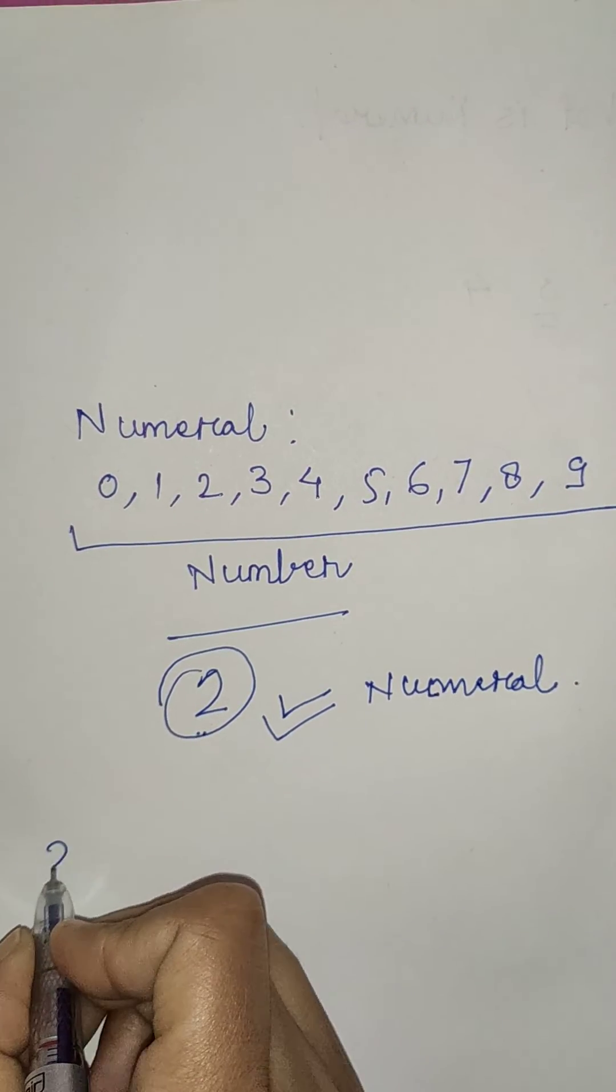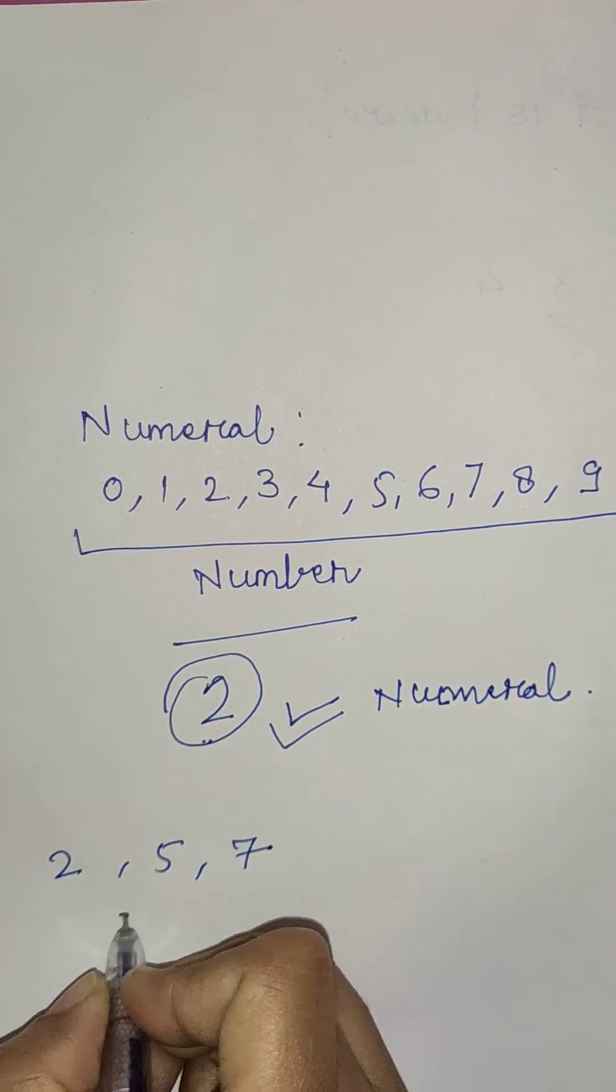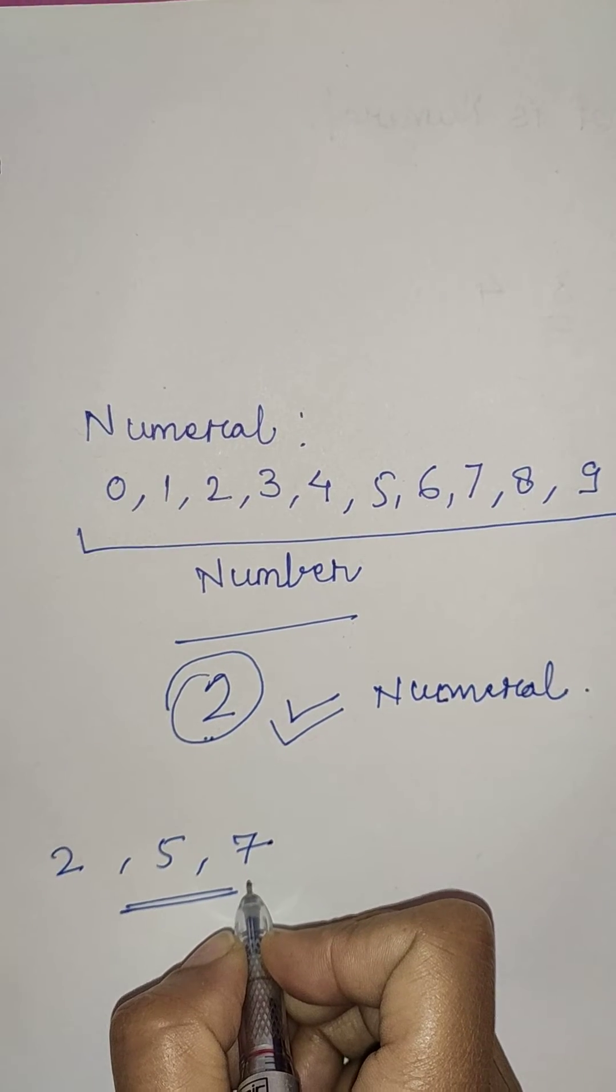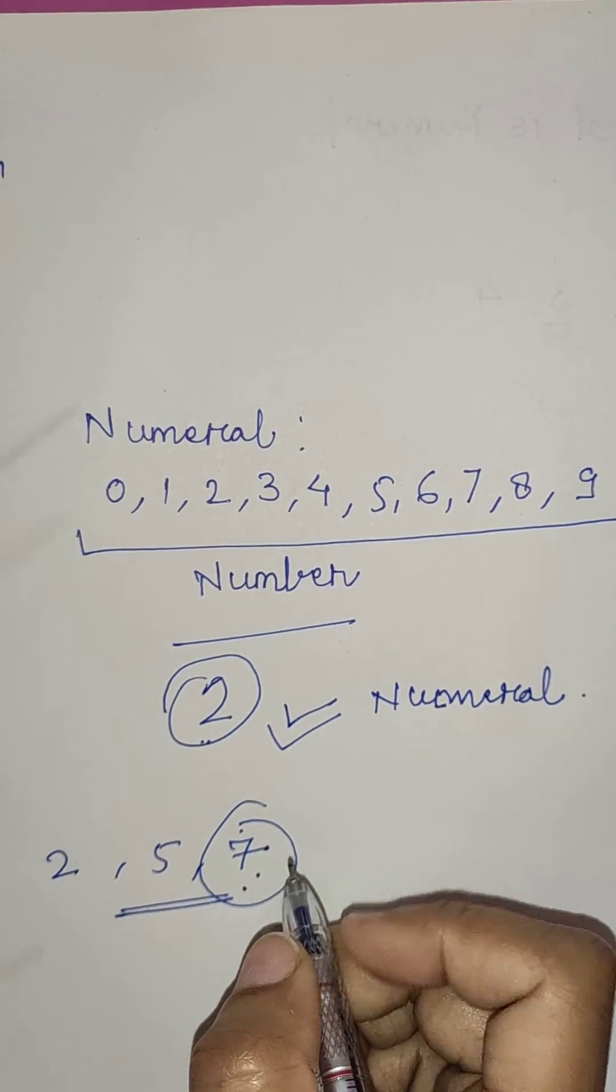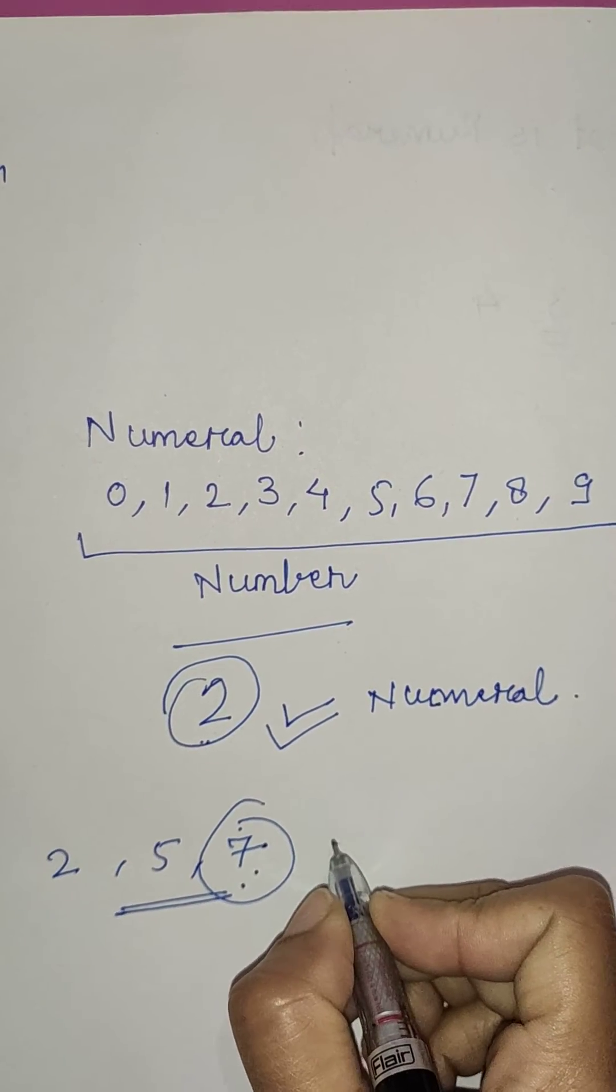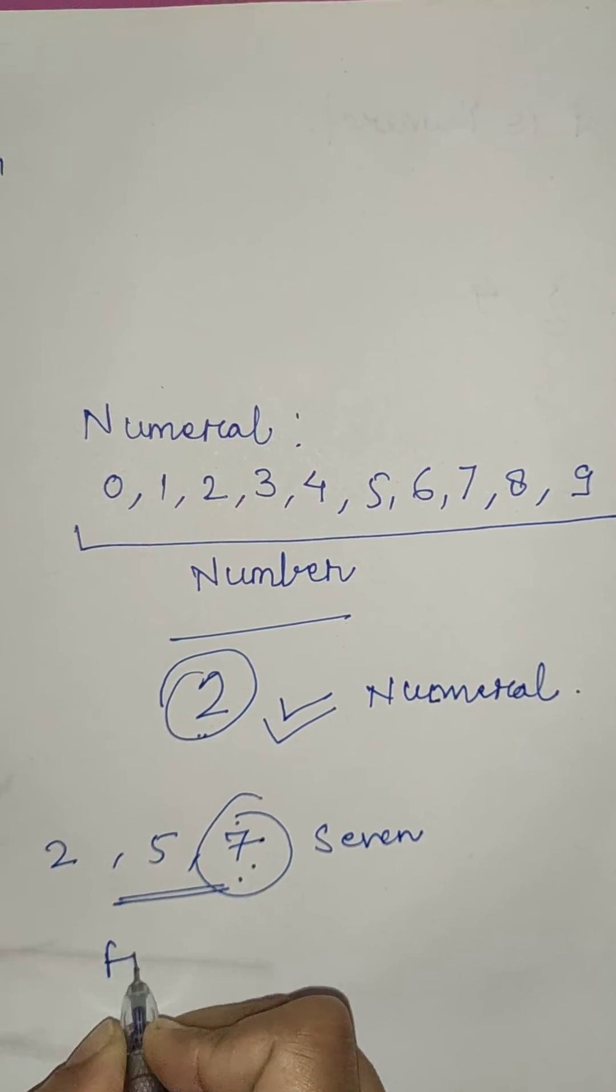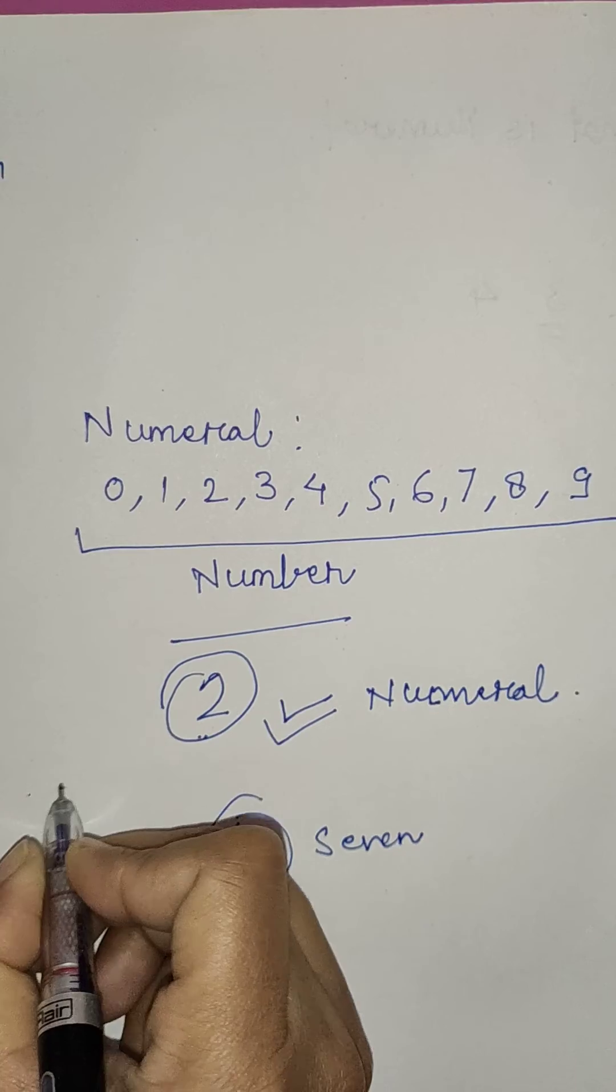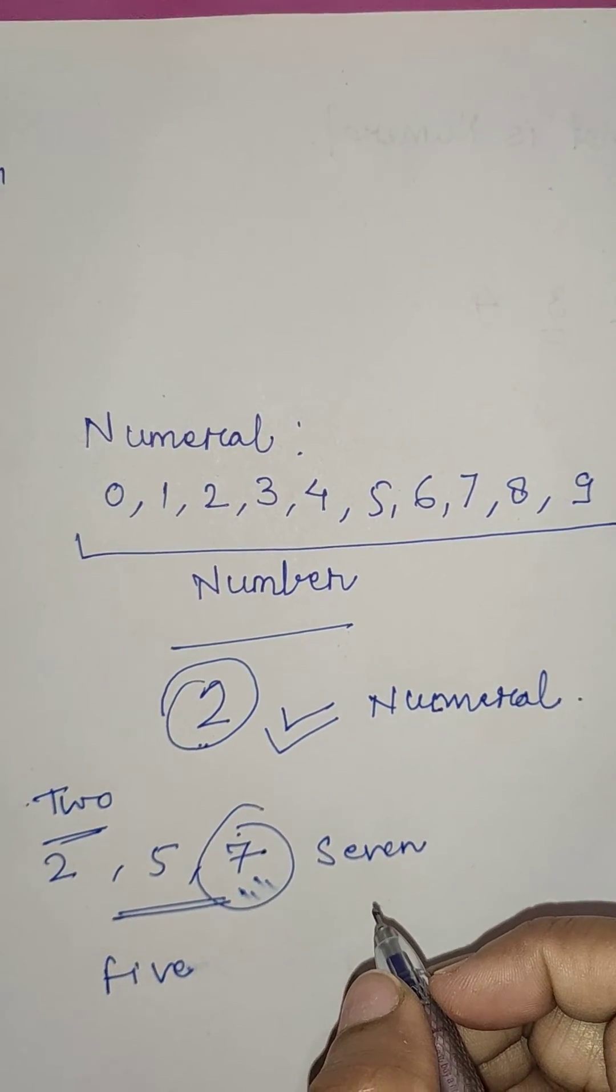Numbers like 2, like 5, like 7. When written in words, like seven, like five, like two, this is called number name.